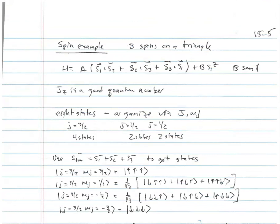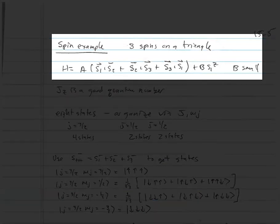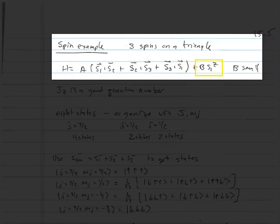We'll end the lecture with another example: a spin model with three spins on a triangle, interacting via the Heisenberg exchange interaction — A times the dot product of spins on neighboring sites, summed over all pairs: S1·S2 + S2·S3 + S3·S1. We also apply a magnetic field only on site 1, giving a Zeeman term B·S1z, with B small so we'll do perturbation theory in B.